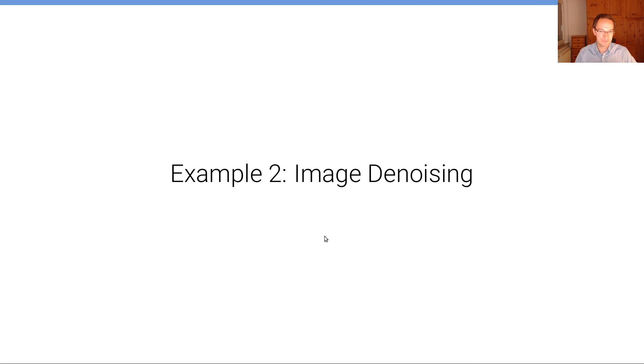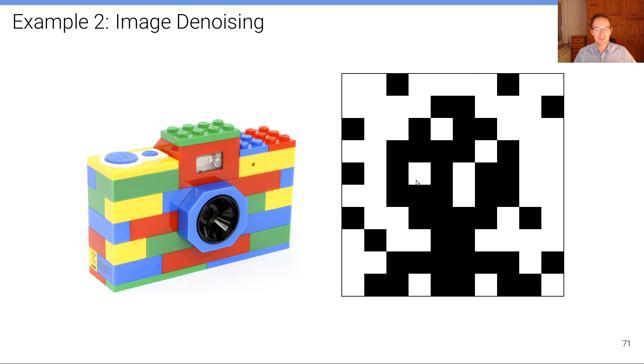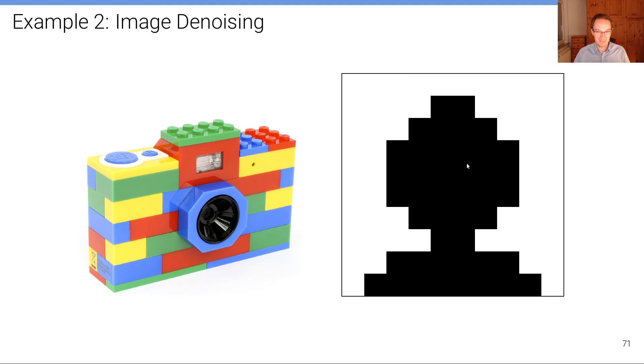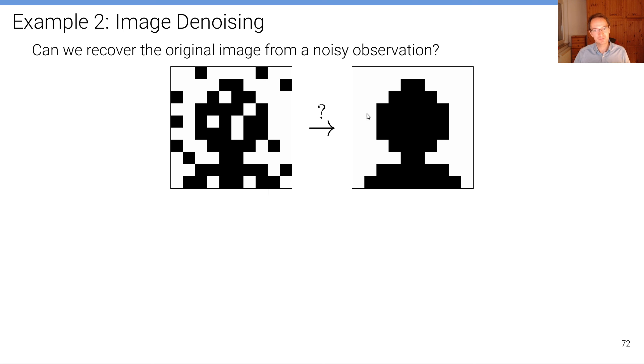A second example is image denoising. Let's assume we bought a camera, but the camera is not so good. The camera is a black and white camera. It has just 10 by 10 pixels, 100 pixels in total, and not even that, it actually takes very noisy images. So this is what you want to take, but this is what you actually take. So now the question is, how can we go from this noisy image to the clean image? And that's called image denoising.